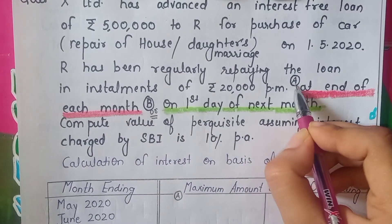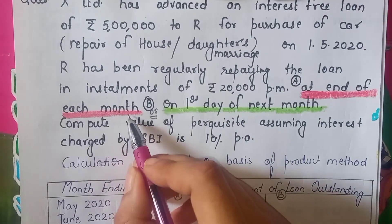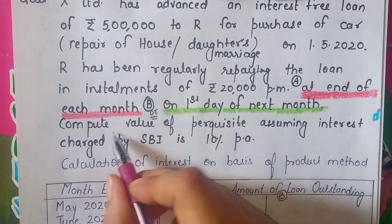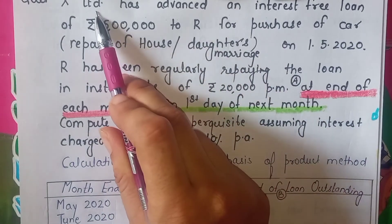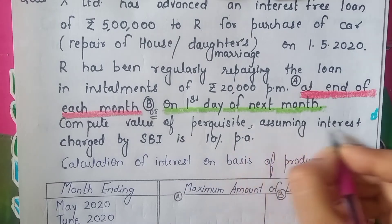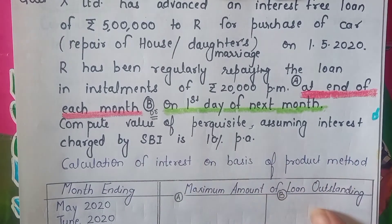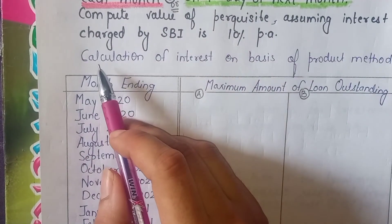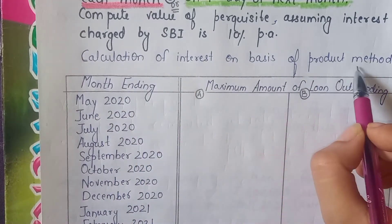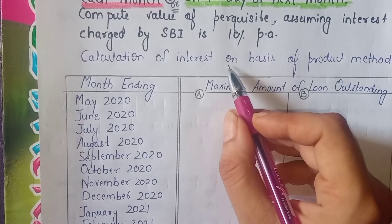What are the two situations? Situation A says the repayment of ₹20,000 goes on the last date of the month. Situation B says the repayment goes on the first date of the next month. Compute the value of perquisite for Mr. R. X Limited has given this loan, and the State Bank of India rate for a similar loan is 10% per annum. You need to make a working note with the heading: Calculation of Interest on the Basis of Product Method.